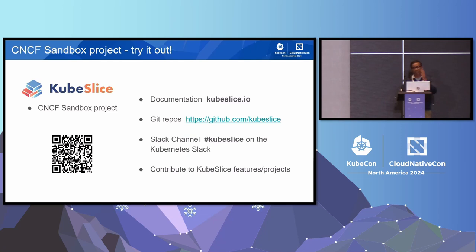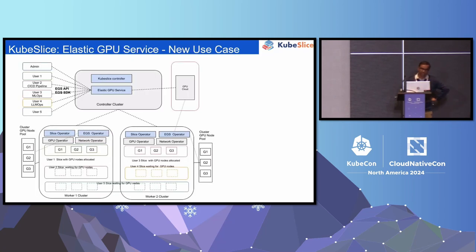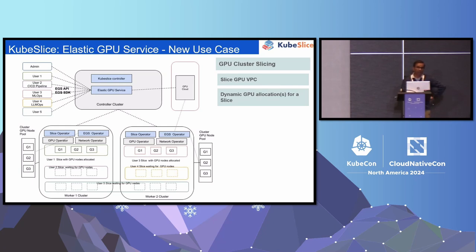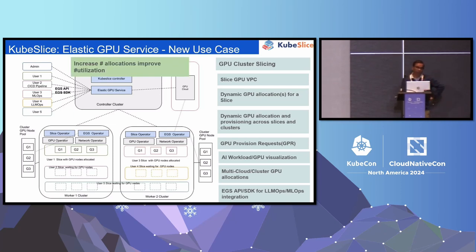Come check out KubeSlice, our CNCF sandbox project — we recently got onto sandbox. We are excited about new use cases, continuing with our multi-cloud, multi-cluster, multi-tenant theme. We are doing GPU allocation extension and resource usage extension as well. This includes GPU cluster slicing, GPU VPC, and dynamic allocation. There are no good open-source dynamic GPU allocation platforms — especially dynamic allocation across slices and clusters. As you deploy GPU workloads across slices or clusters, we want Slice to get you there, helping with more allocations, improved utilization, and better ROI out of your GPU resources for different teams and pipelines.